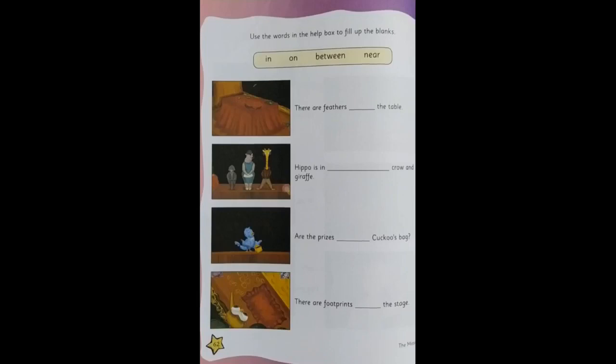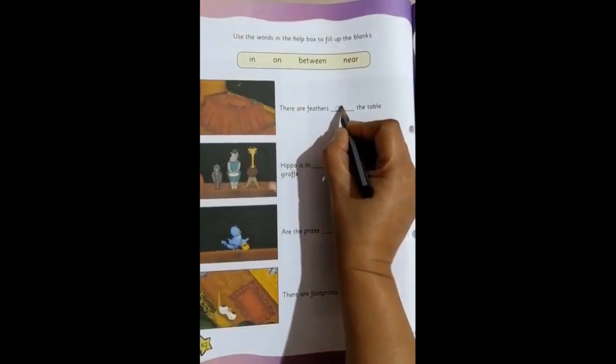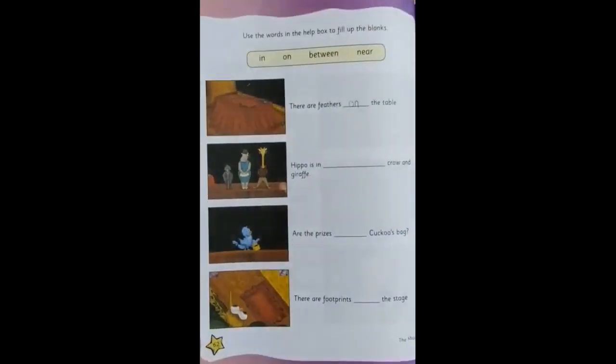So let's go to the first one. There are feathers dash the table. So can you see the picture and tell where the feathers are? Yes, it is on the table. So we will write on, O and N, on.